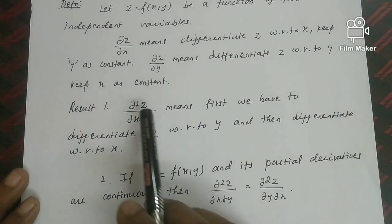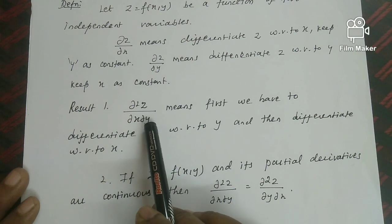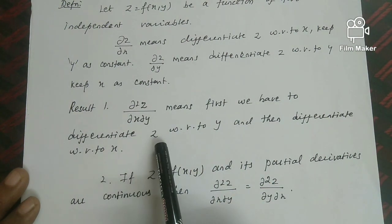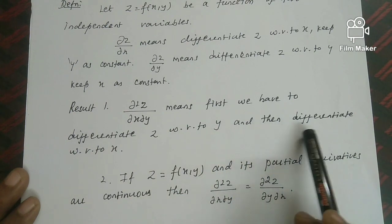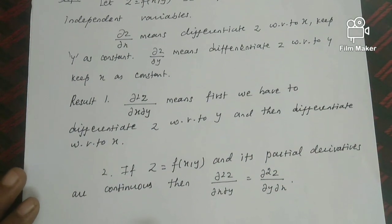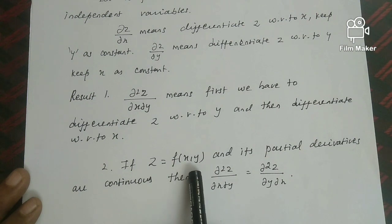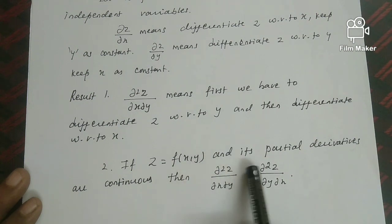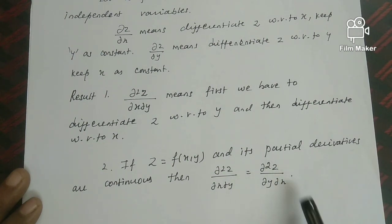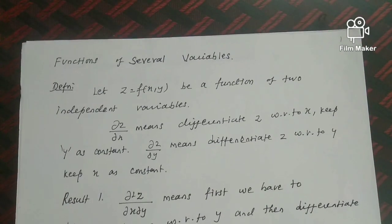Result 1: ∂²z/∂x∂y means first differentiate z with respect to y, and then differentiate with respect to x. If z = f(x, y) and its partial derivatives are continuous, then ∂²z/∂x∂y equals ∂²z/∂y∂x.